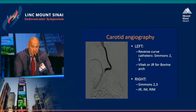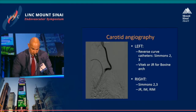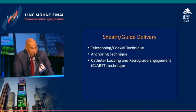This may be a little cumbersome — you need experience with reverse curve catheters, which are the best ones to engage the carotids: Simmons 2 and Simmons 3. For bovine arches, we prefer using VTEC catheters. The right carotid is frequently engaged with a Simmons 2 or Simmons 3 as well. There are various techniques for advancing the sheath and guide delivery: the telescoping technique, the anchoring technique, or catheter looping and retrograde engagement.